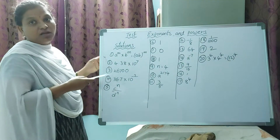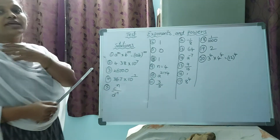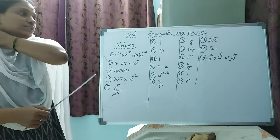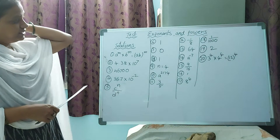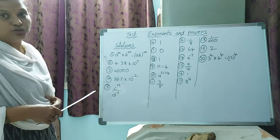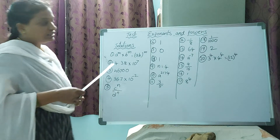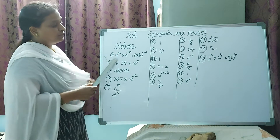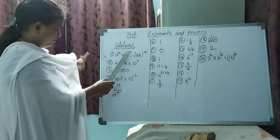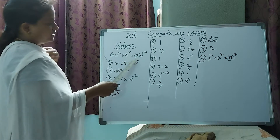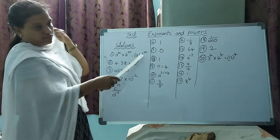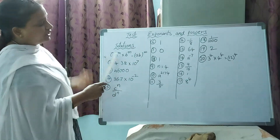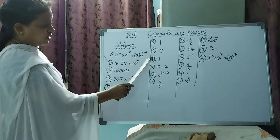Since we completed that chapter, I gave a simple test. These are the solutions. See the first one: a power m into b power m equals (ab) whole power m — we have to use that formula.